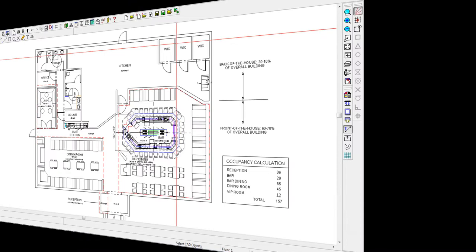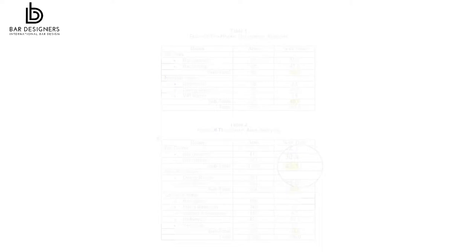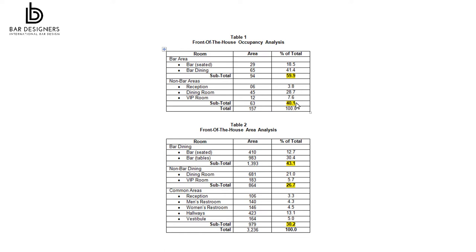Now let's analyze our information. You'll note in this example that the bar and bar dining areas account for nearly 43% of the front of the house area, as well as 60% of the total occupant load. Conversely, the non-bar dining accounts for 27% of the front of the house area and 40% of the occupant load. The remaining front of the house space of 30% is dedicated to common areas.